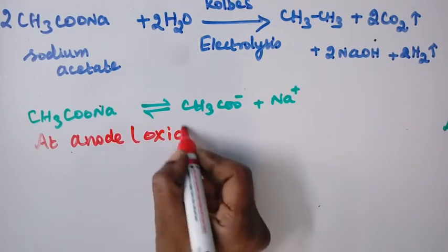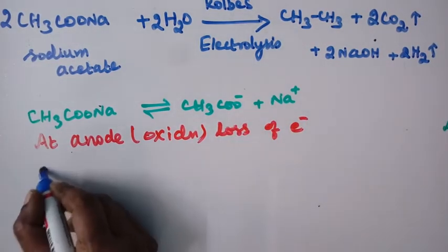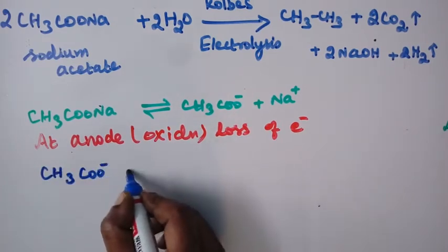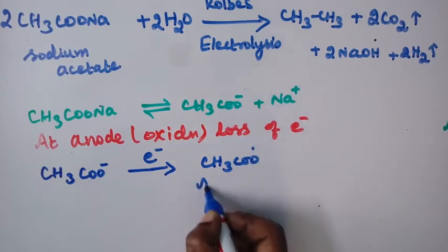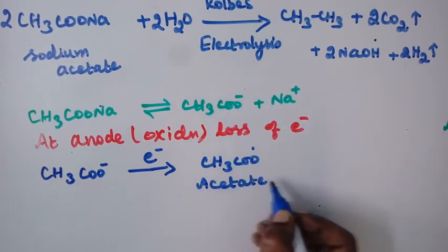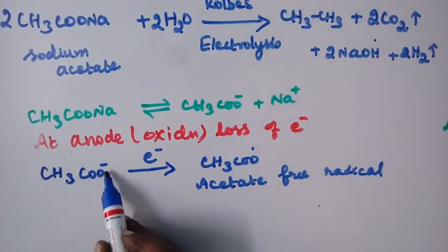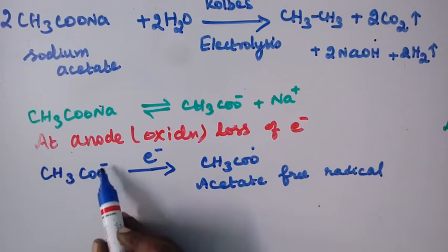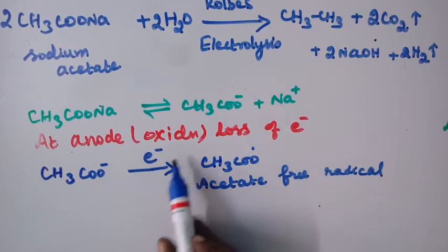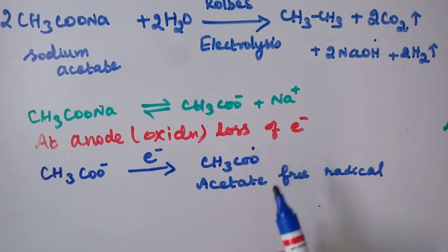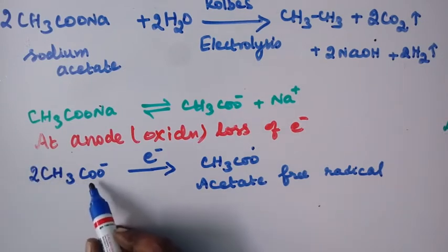Oxidation means loss of electron. The acetate anion CH3COO⁻ loses an electron and becomes a radical — this is the acetate free radical. The minus charge on CH3COO⁻ contains two electrons; one electron is discharged at the anode, so the remaining one electron is unpaired, making it a free radical. So two CH3COO⁻ give two electrons and two free radicals.